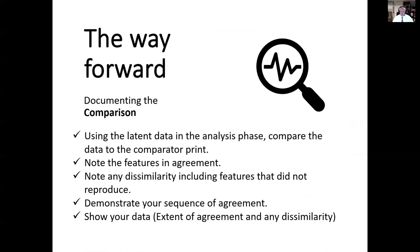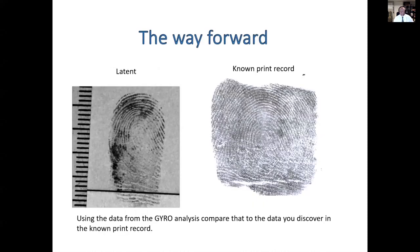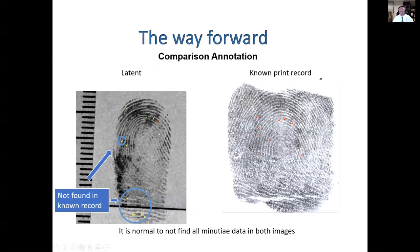Then you have to document the comparison. You use the latent data from the analysis phase and compare it to the comparator print. You note the features that are in agreement, you note any dissimilarity — including features that did not reproduce — and you demonstrate your sequence of agreement and show the extent of agreement and dissimilarity. Here we have our comparator — the ten-print, doesn't look all that great, but it's the world we live in. This was the data from the GYRO level two analysis — all the red dots show features that were in agreement between the latent print and the known print record, and these are the features that didn't reproduce. It's very normal to not find all the minutiae in both images, but it needs to be stated.